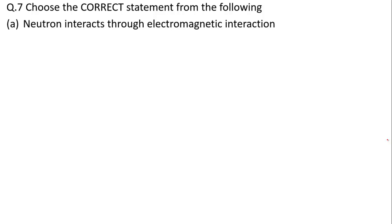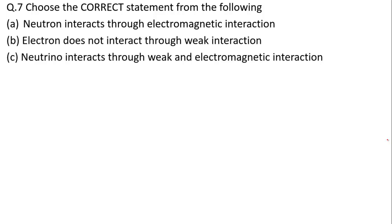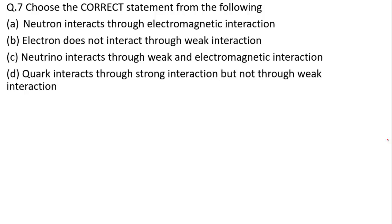Question 7: Choose the correct statement — neutron interacts via electromagnetic interaction; electron doesn't interact via weak interaction; neutron interacts via weak and electromagnetic interaction; quark interacts via strong interaction but not weak. Neutron and proton always interact via strong interaction, so option A is wrong. Electron does interact via weak interaction, so B is wrong. Neutrino interacts via weak but not electromagnetic, so C is wrong. Quarks interact via strong interaction but not weak — option D is absolutely correct.